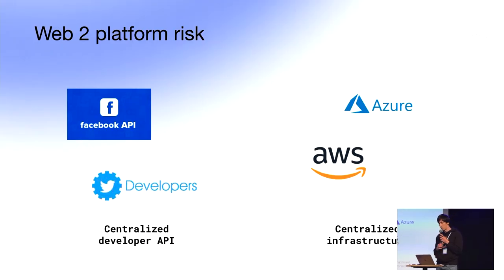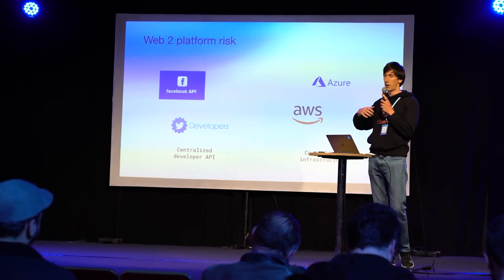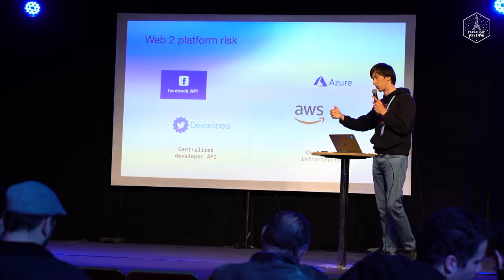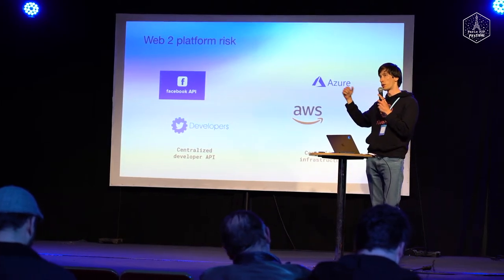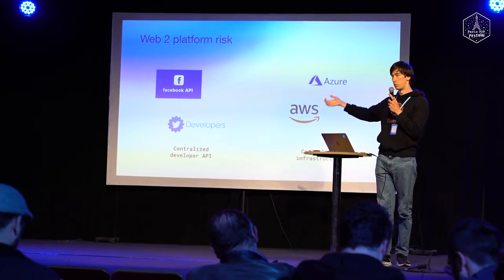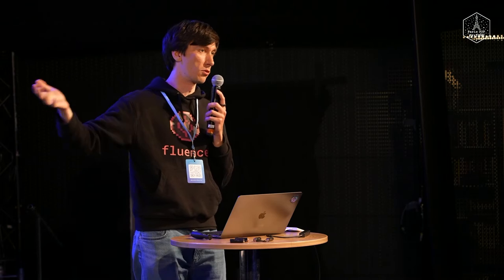The obvious reasons why this is important: centralized infrastructure — servers, hardware owned by centralized companies — is a risk. But also centralized APIs are a risk. If you're building your application using someone else's data, like Facebook data, Twitter data, or any Web2 API, they control the data and your access to it. If you're building your business on top of some other company's data, you're dependent on them and they can cut you off.